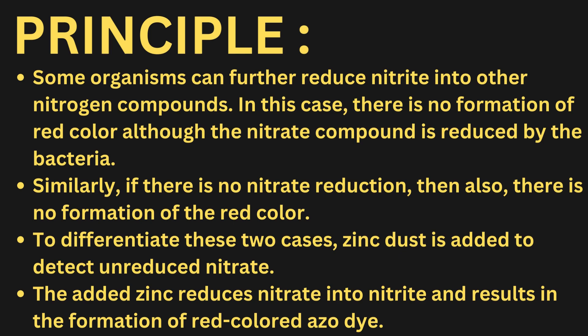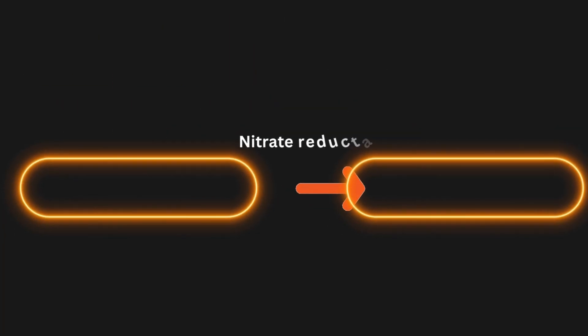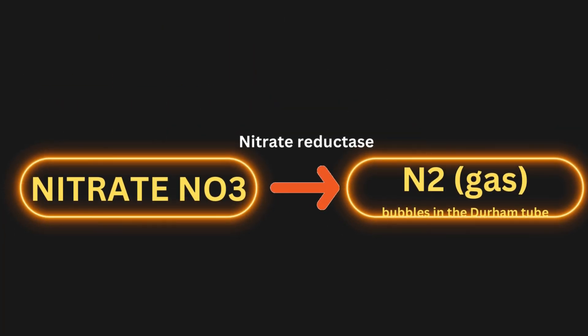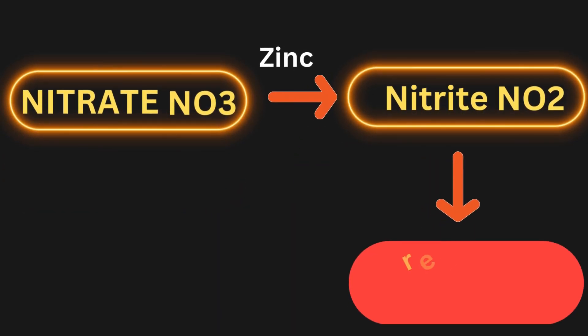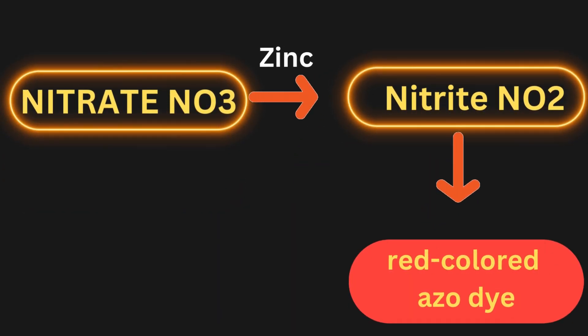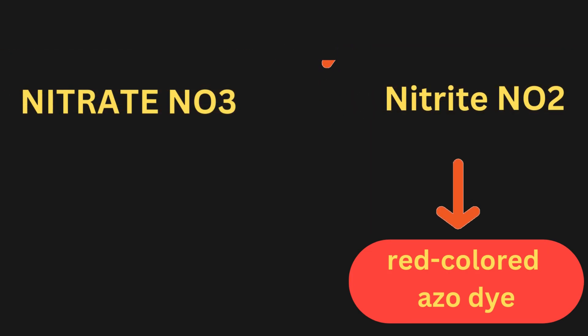Some organisms can further reduce nitrite into other nitrogen compounds. In this case, there is no formation of red color, although the nitrate compound is reduced by the bacteria. Similarly, if there is no nitrate reduction, there is also no formation of red color. To differentiate these two cases, zinc dust is added to detect unreduced nitrate. The added zinc reduces nitrate into nitrite and results in the formation of red-colored azo dye.